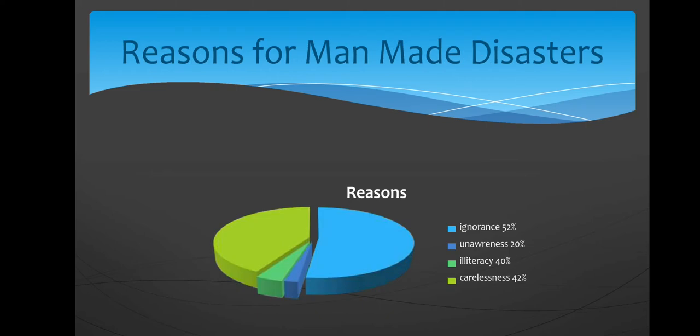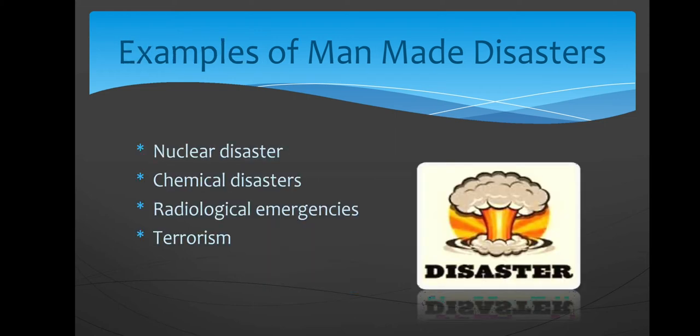Here are some reasons for man-made disasters. The causes of man-made disasters are: ignorance at 52 percent, unawareness at 20 percent, illiteracy at 40 percent, and carelessness at 42 percent. Examples of man-made disasters include nuclear disaster, chemical disaster, radiological emergencies and terrorism.